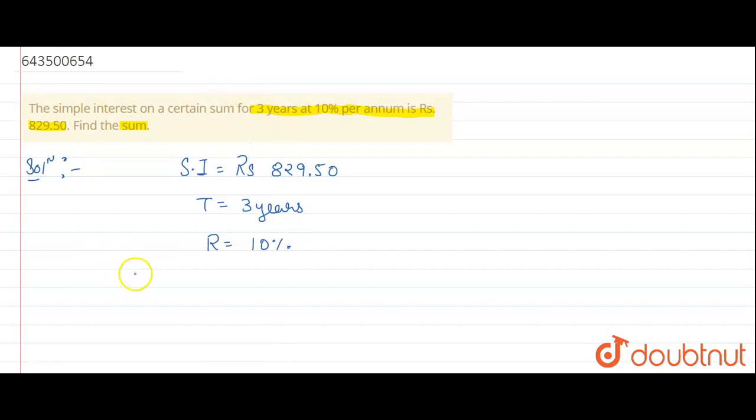Now, we know that SI, that is simple interest, is equal to P into R into T divided by 100.